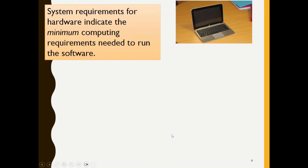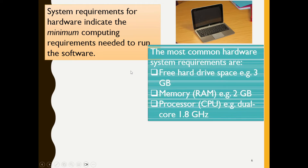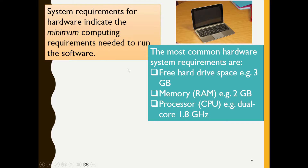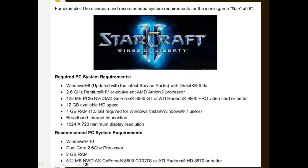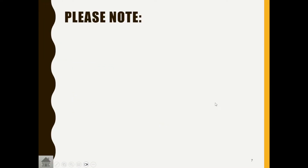System requirements for hardware indicate the minimum computing requirements needed to run the software — not necessarily efficiently, just to run it. The most common hardware system requirements are hard drive space, memory, and processor speed. This is a typical exam question. Other hardware requirements might include minimum screen resolution or specialized hardware — for example, StarCraft requires a specific type of graphics card because it's a game dealing with graphics.